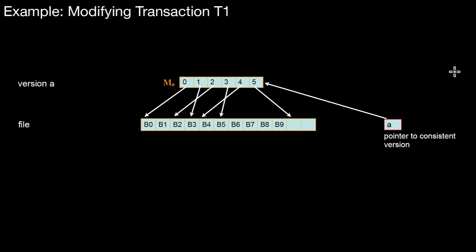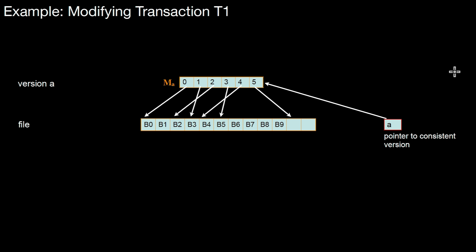So, let's look at an example. Assume we have a modifying transaction T1. We have a file, but here in this file we don't have A and B versions. We just have blocks numbered from 0 to 9 in this example. But what we also have is a mapping table. This mapping table maps block numbers, logical block numbers, to physical block numbers.